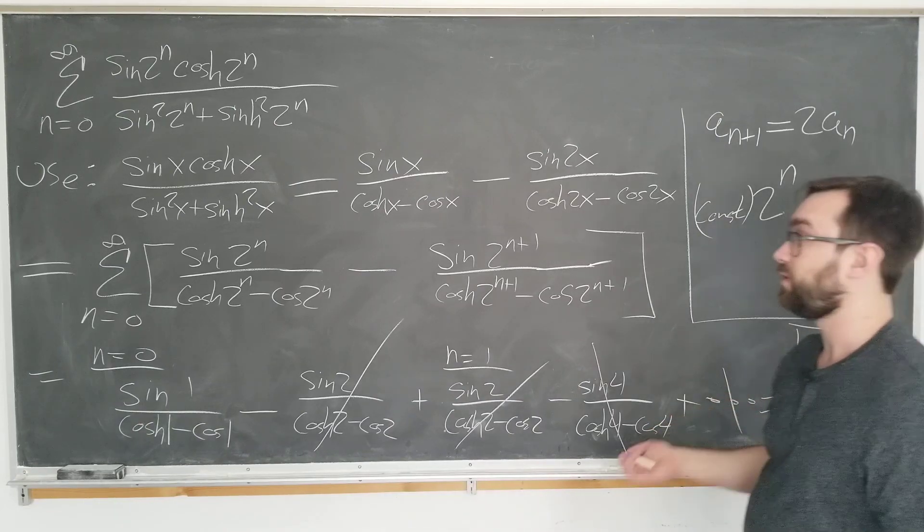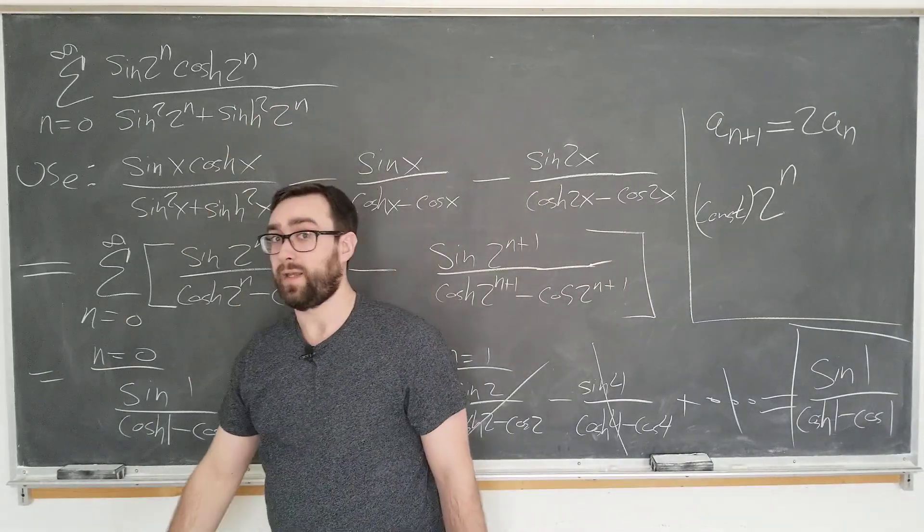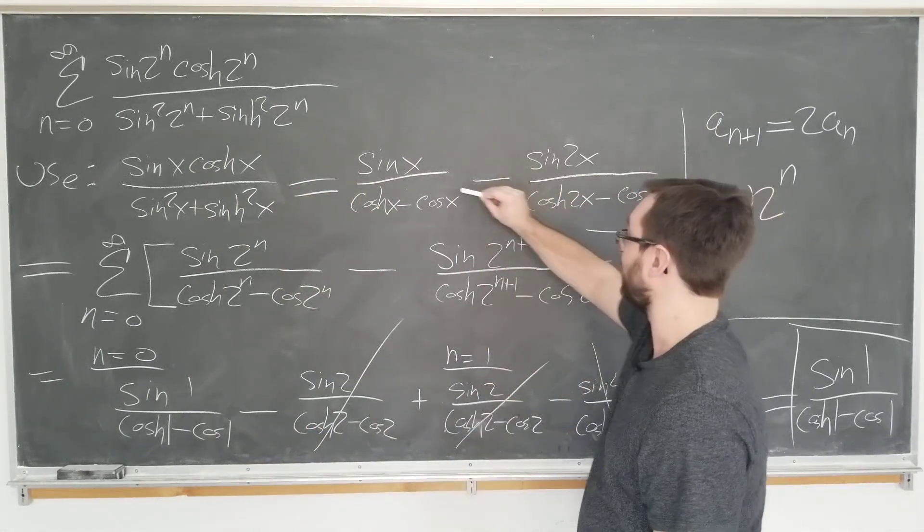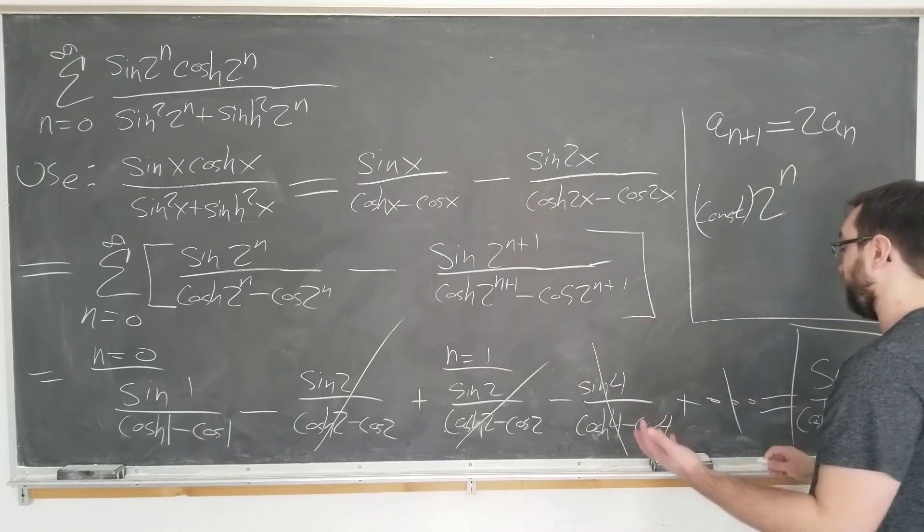A constant would also satisfy that. But the exponential function of base 2 is the most fundamental function that would satisfy this. That's the only reason why the 2 to the n is here. It looks unusual, but it's just the only sequence that satisfies this identity being telescopic.